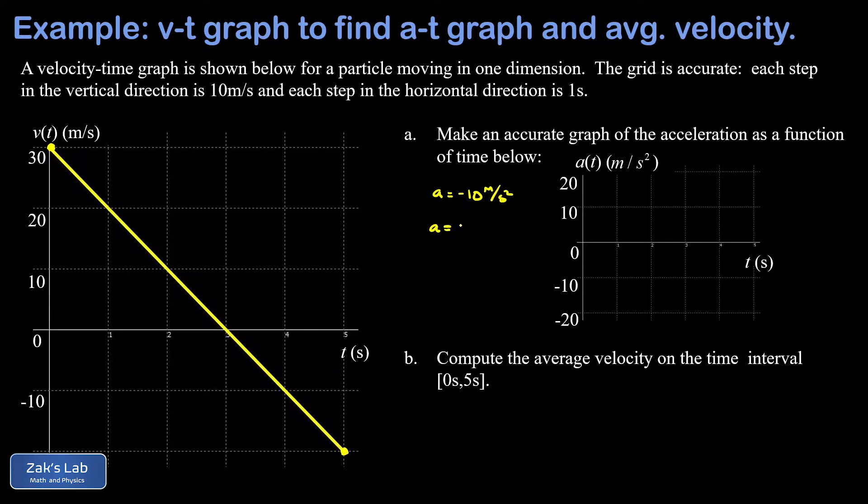The final velocity is negative 20 on that interval. The initial was 30, and the amount of time it took was 5 seconds. That's negative 50 over 5, and I get negative 10 meters per second squared once again.